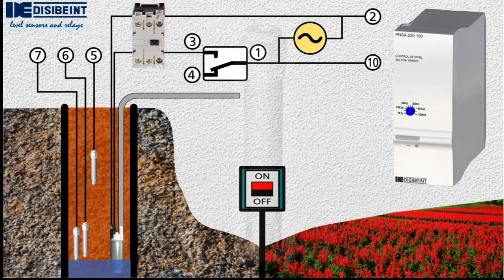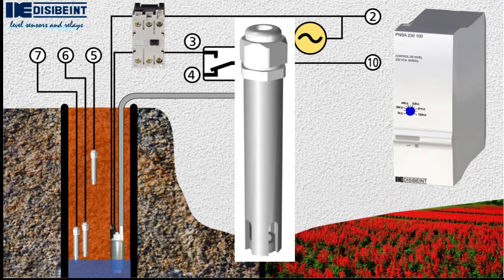NS probes are conductive electrodes made of stainless steel and protected by a polypropylene body. They are heavy so that they remain stable when hanging from the cable to which they are connected and do not lose their position.